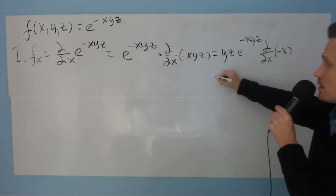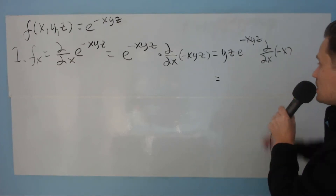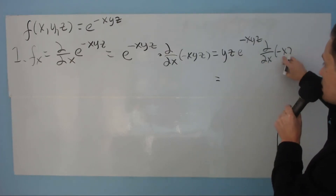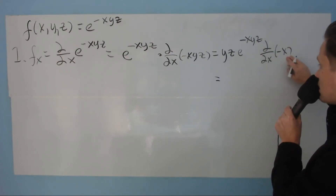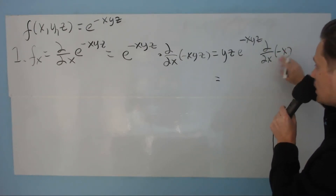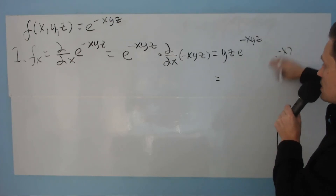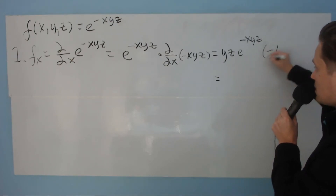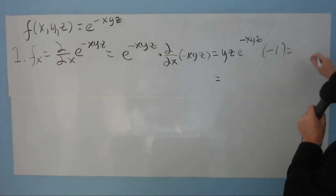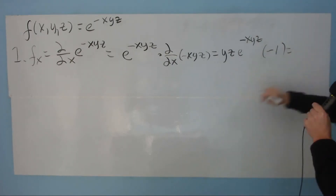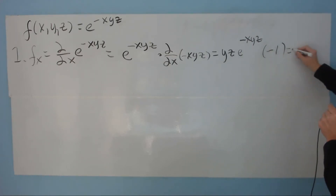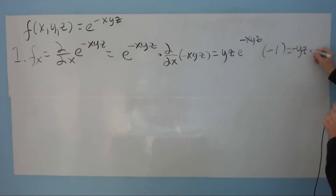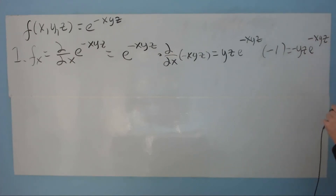So the whole derivative at the end will look like this. The partial with respect to x of negative x has the value negative 1. So I can just put negative 1 in this position. Lastly, when I rewrite it, it's going to look like this: negative y, z times e to the negative x, y, z. So that's how you do the partial with respect to x.